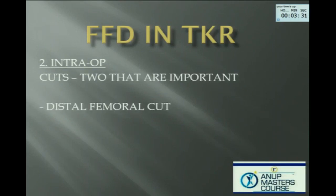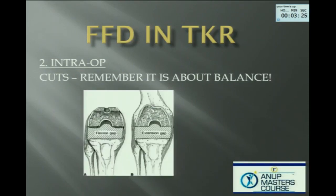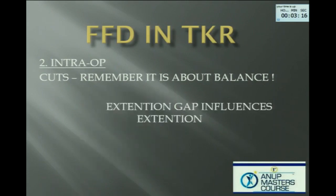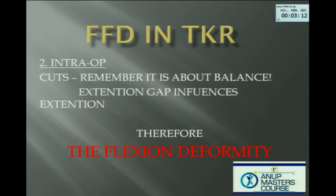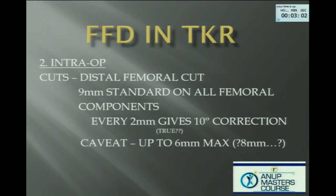Let's grade it quickly. Grade 1: up to 30 degrees. Grade 2: 30 to 60 degrees. Grade 3: more than 60 degrees. Is it a plain TKA? Is it a bony problem with a soft tissue solution, or a soft tissue problem with a bony solution? Regarding cuts — two cuts are important in my opinion: the distal femoral cut and the anterior femoral cut. For every 2mm extra cut on the distal femur, you get a correction of up to 10%, though that figure is debated with navigation. Do not go more than 6 to 8mm, otherwise it will start changing your joint line.